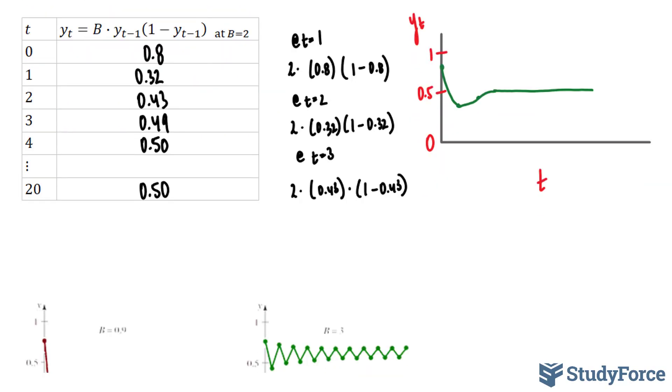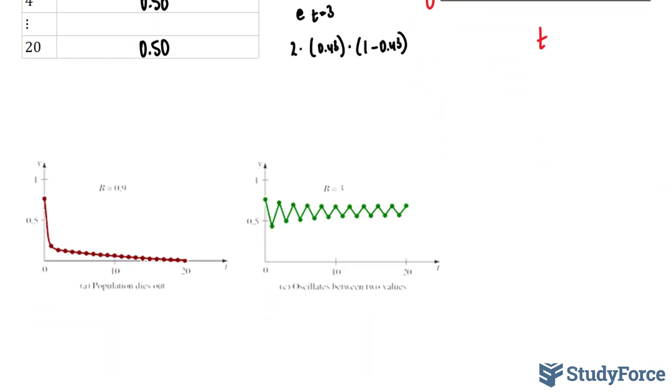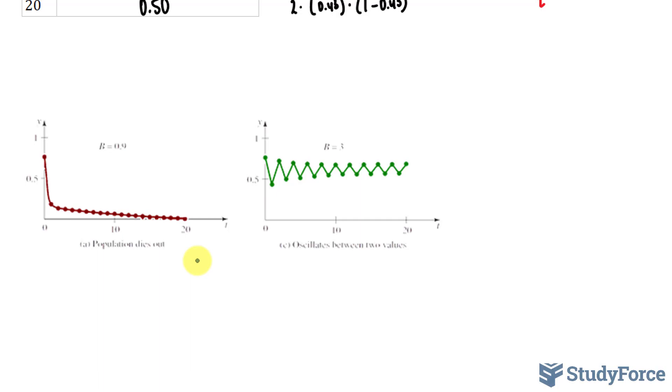It turns out that when b is equal to 0.9, as shown here, the population dies out eventually. And when b is equal to 3, the population oscillates between two values.